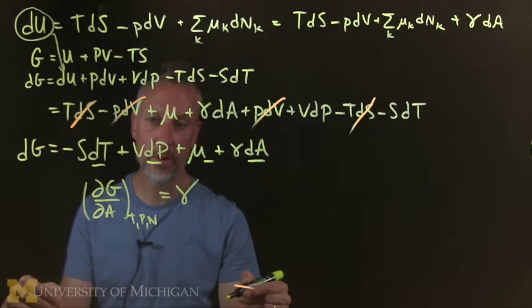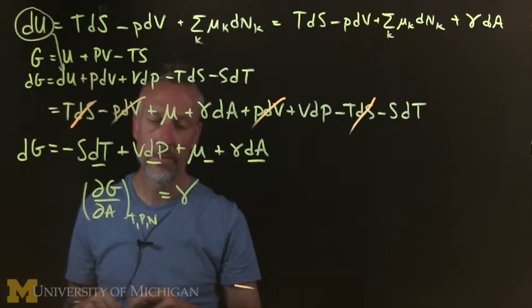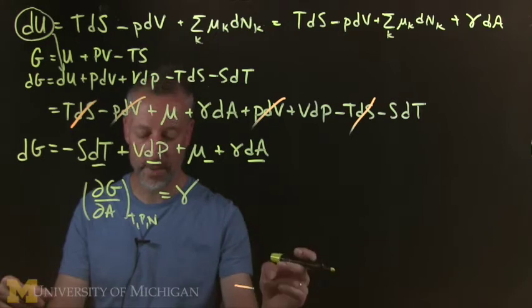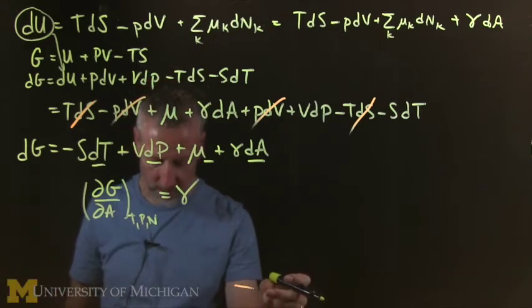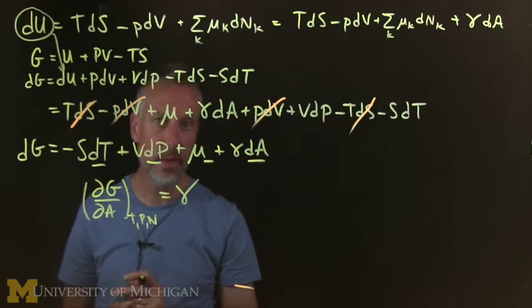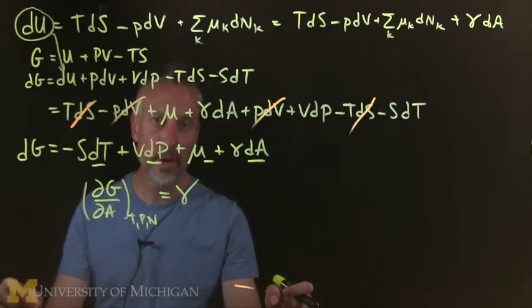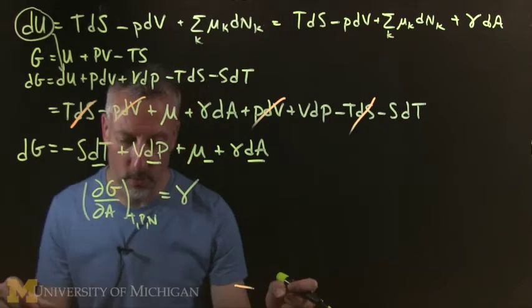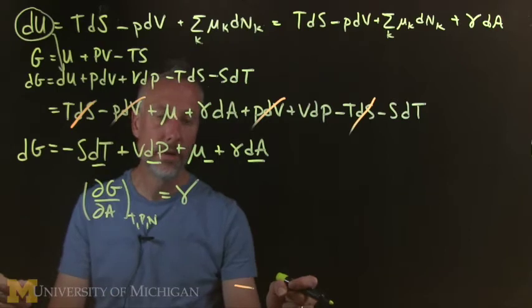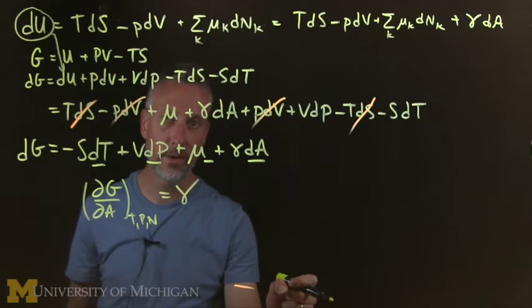So if you measure the surface tension while you vary the area, you can make measurements to find what the equilibrium properties will be. This turns out to be nowadays quite a big business because people are very interested in membranes.